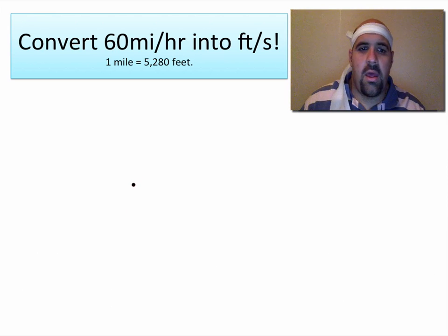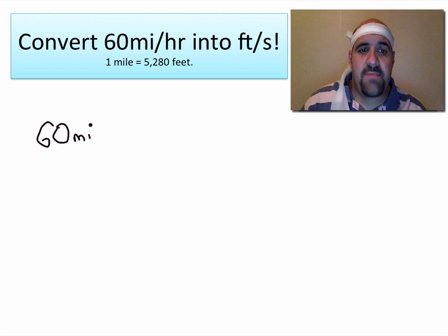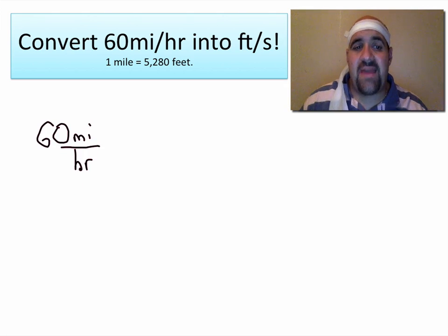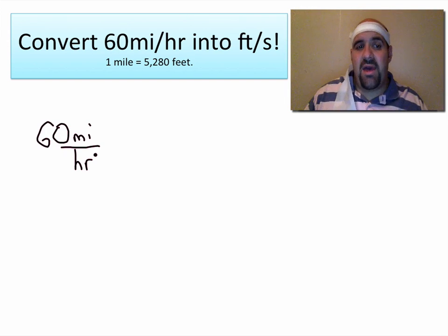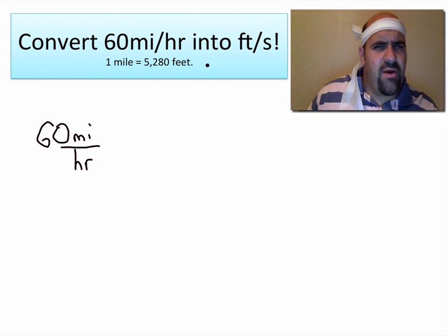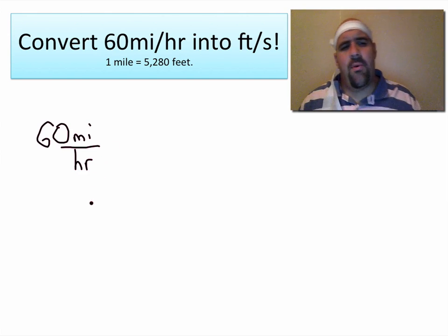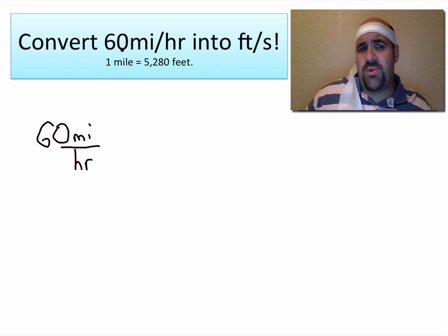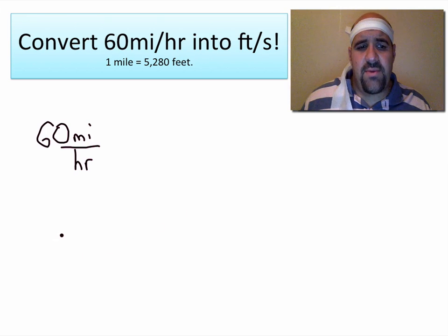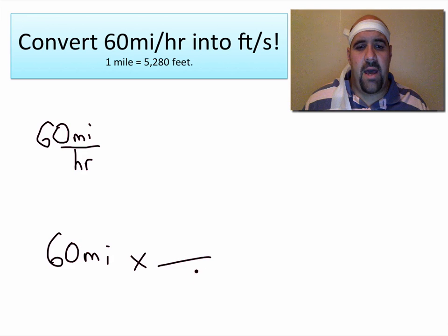The idea is if you're in a vehicle traveling 60 miles per hour — a typical highway speed — that means every single hour that goes by, if you maintain that pace, you would travel 60 miles. But I want to know how many feet you would travel every single second. What makes this problem difficult is if all we had to do was convert 60 miles into feet, we would simply go 60 miles times 5280 feet per mile.